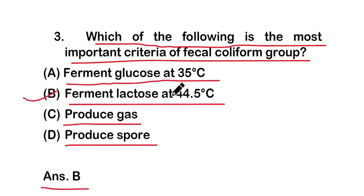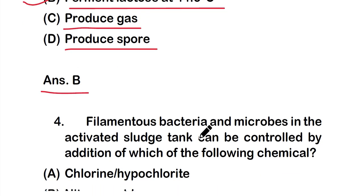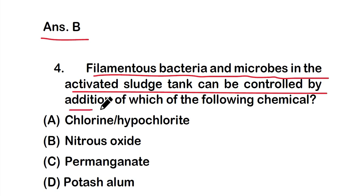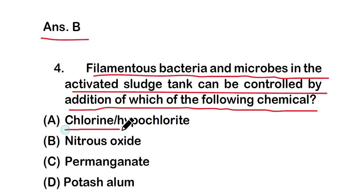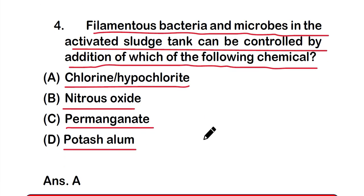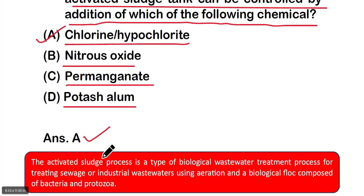Question four: filamentous bacteria and microbes in the activated sludge tank can be controlled by addition of which of the following chemicals? Options: option A - chlorine or hypochlorite, option B - nitrous oxide, option C - permanganate, option D - potash alum. The right answer is option A — chlorine or hypochlorite can be used to control filamentous bacteria and microbes in the activated sludge tank.